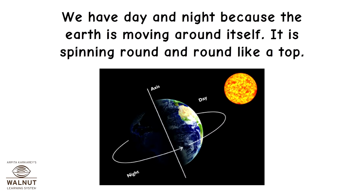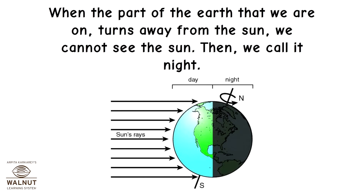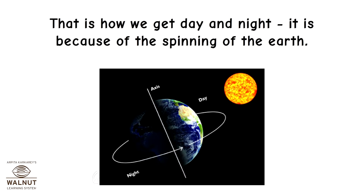It is spinning round and round like a top. When the part of the Earth that we are on faces the sun, we see the sun — we call that time day. When the part of the Earth that we are on turns away from the sun, we cannot see the sun. Then we call it night. That is how we get day and night — it is because of the spinning of the Earth.